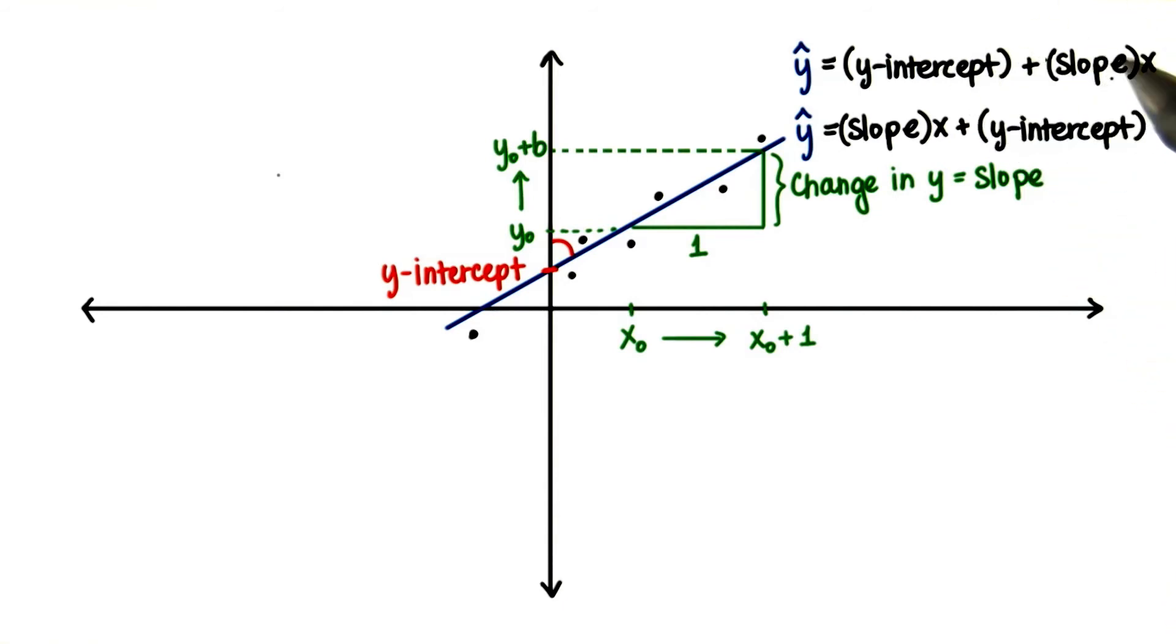Sometimes one of these, the slope or the y-intercept, might be negative, so it's just important to keep that in mind. As long as we keep those negatives and positive signs correct, the order doesn't matter.